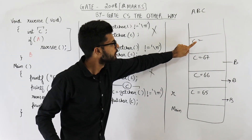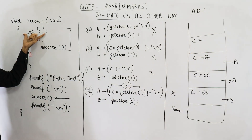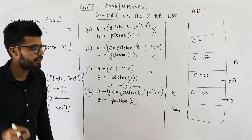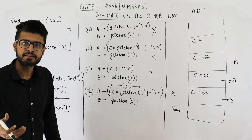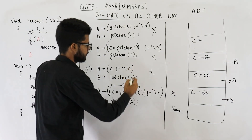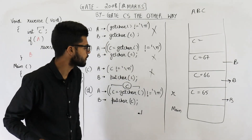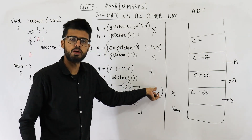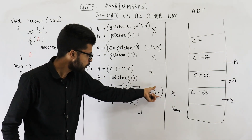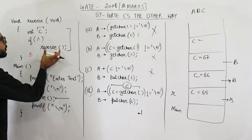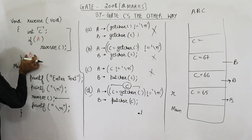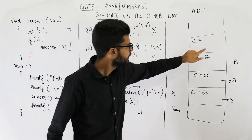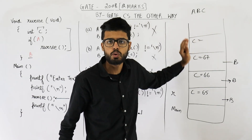When the new function starts, int C is declared, and then the if condition is checked. Inside the if, getchar asks for one character input. Suppose this time the user presses the Enter key — backslash n. Now C equals backslash n, so this condition becomes false. Because the condition is false, the function reverse is not called again. Instead, line B must now be executed. So no more recursive calls are made, and this function will now end.